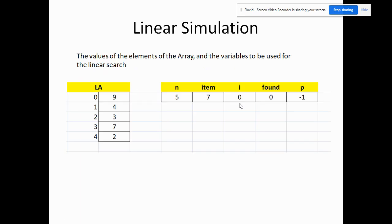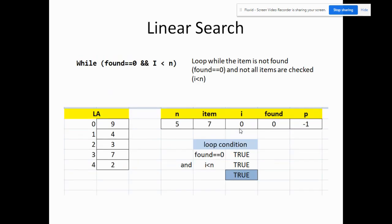Now let's simulate. We have item equal to seven — the value we're searching for in the linear array. N is five, i starts at zero, found is zero, and position p is negative one. Checking the loop condition: found equals zero is true, and i less than n (zero less than five) is also true, so we enter the loop.